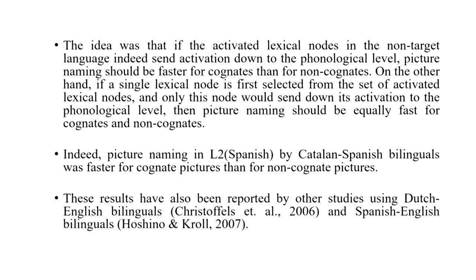Indeed, picture naming in L2 Spanish by Catalan-Spanish bilinguals was found to be faster for cognate pictures than for non-cognate pictures. This tells us that there is some evidence that phonological encoding happens for non-target language translational equivalents as well. Similar results have also been reported by other studies using Dutch-English bilinguals and Spanish-English bilinguals.